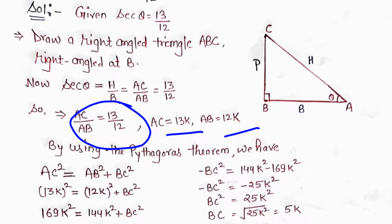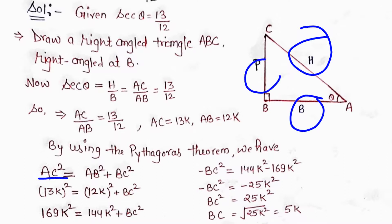Now we have AC and AB, but we need to find BC. We will use the Pythagorean theorem. By the Pythagorean theorem, AC² = AB² + BC².